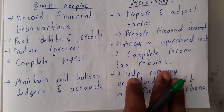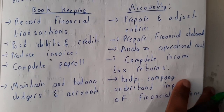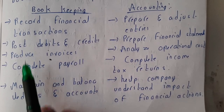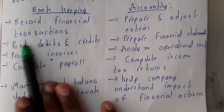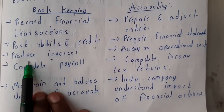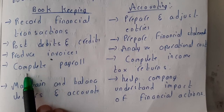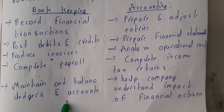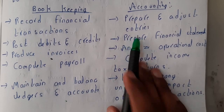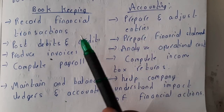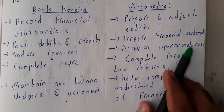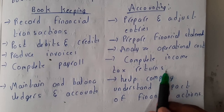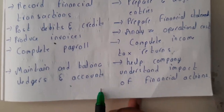Now let us go through some differences between bookkeeping and accountancy. Bookkeeping involves recording financial transactions, posting debits and credits, producing invoices, completing payrolls, and maintaining and balancing ledgers. Accounting involves preparing and adjusting journal entries, preparing financial statements, analyzing operation costs, and completing income and tax returns.